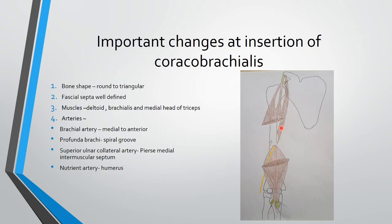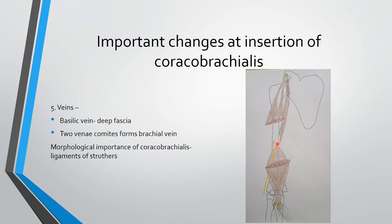The medial head of the tricep is also attached on the posterior aspect of the humerus at this level. The brachial artery crosses from medial to anterior aspect at this level. The profunda brachii artery crosses from medial to lateral on the posterior aspect of the humerus in the radial groove. The superior ulnar collateral artery pierces the medial intermuscular septum at this level. The nutrient artery supplies the bone at this level. The basilic vein also forms at this level and pierces the deep fascia. Two venae comitantes around the brachial artery form the brachial vein at this level.